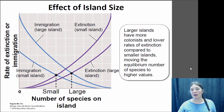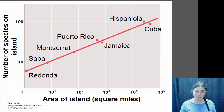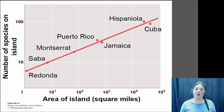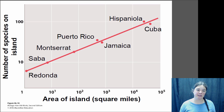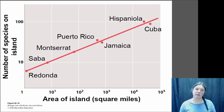If you actually go out and look at the data — this is some data from the Caribbean — these are a number of different islands of varying sizes, and you see exactly what the model predicts: large islands have a greater number of species than small islands.